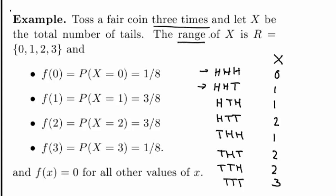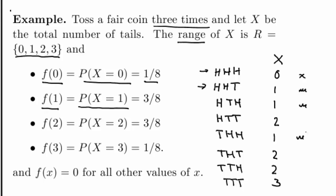So we can see that the range of x is 0, 1, 2, or 3. f of 0, the probability that I'll get zero tails, is 1 over 8. There is just one case where I get zero tails, and that is if I toss three heads in a row. f of 1, the probability of getting one tail, well, that can happen in three different ways — here, here, and here. So that probability is 3 over 8.